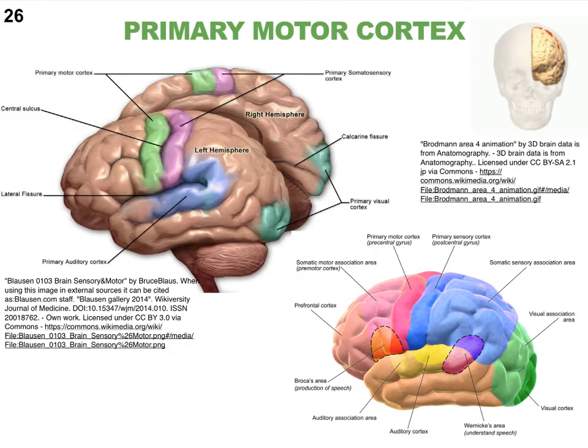That wraps up our discussion of sensory information. We've been talking about the cerebral cortex the whole time — that thin layer of gray matter forming the sulci and gyri, about a tenth of an inch thick but with a huge surface area. The fact that we're still discussing it tells you it's very important, with many functions. It's one of the most well-developed parts of our brain in humans, probably setting us apart from all other animals.